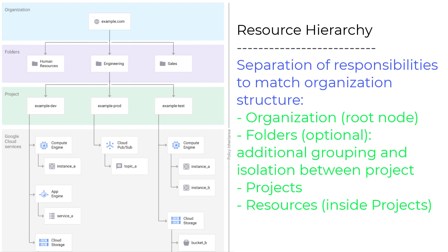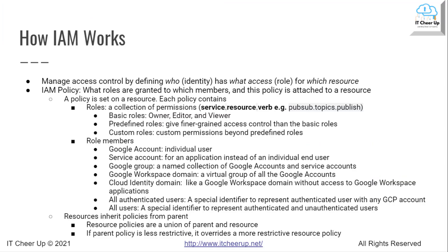And all users, a special identifier to represent authenticated and unauthenticated users. Looking back at the GCP hierarchy, you can set policies at the organization level, project level, and resources level. Resources inherit policies from their parent. Resource policies are a union of parent and resource. If the parent policy is less restrictive, it overrides a more restrictive resource policy.